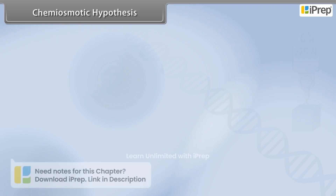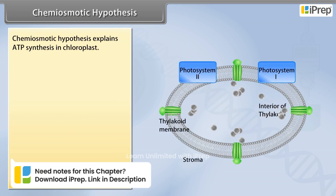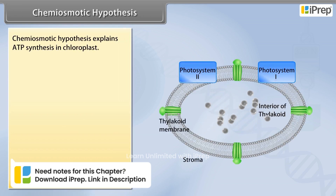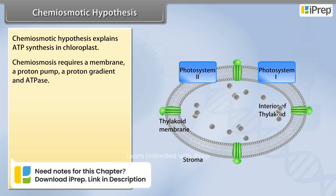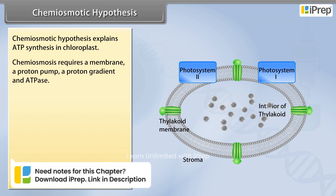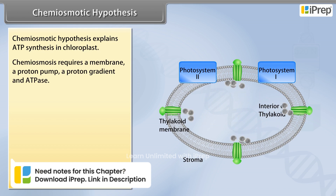The Chemiosmotic Hypothesis explains ATP synthesis in chloroplasts. Chemiosmosis requires a membrane, a proton pump, a proton gradient, and ATPase.